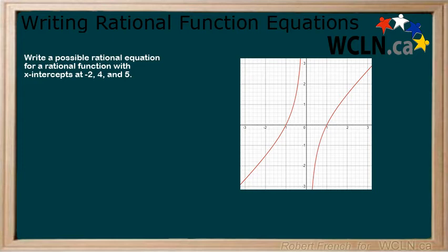In the first example, you are asked to write a possible rational equation with x-intercepts at x equals negative 2, 4, and 5. We begin by writing our basic rational function but leave the numerator blank.